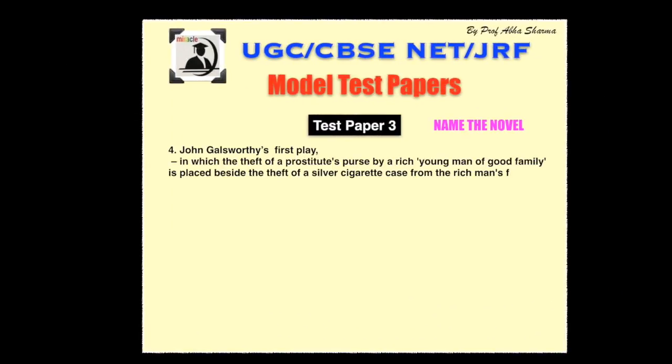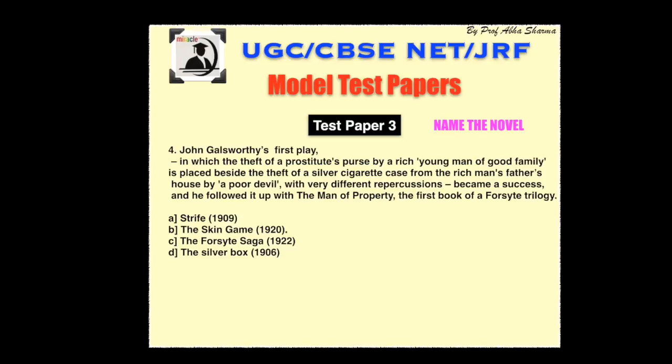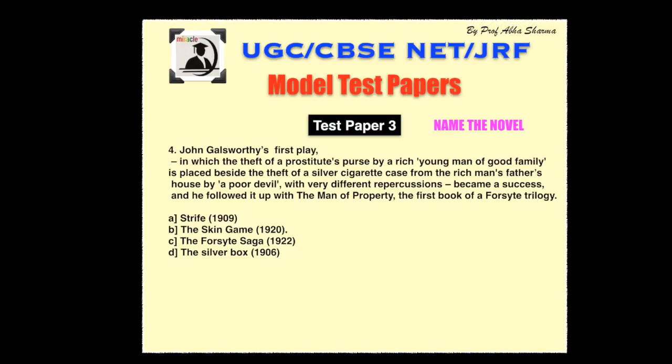Question number four. John Galsworthy's first play, in which the theft of a prostitute's purse by a rich young man of good family is placed beside the theft of a silver cigarette case from the rich man's father's house by a poor man, with very different repercussions, became a success, and he followed it up with The Man of Property, the first book of the Forsyte Trilogy. Options: Strife, The Skin Game, The Forsyte Saga, The Silver Box.